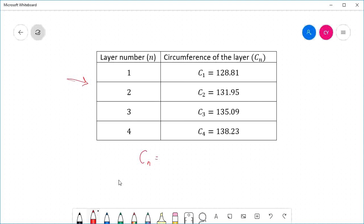And we have a rule that will figure out the length of the circumference on each layer. C sub n equals pi times d plus 2nt, where d is the diameter of the cardboard roll, and t is the thickness of the toilet paper.